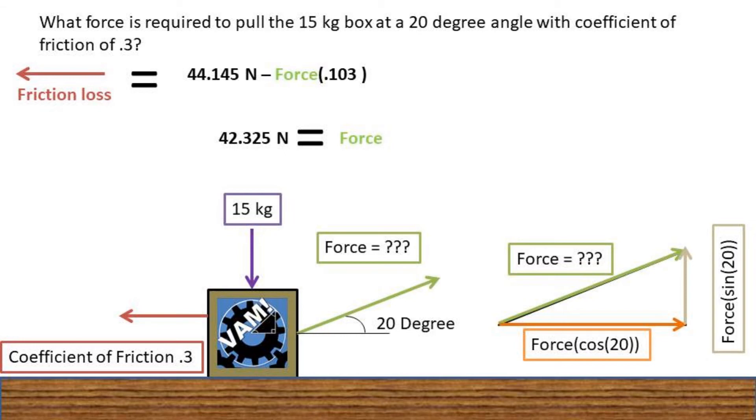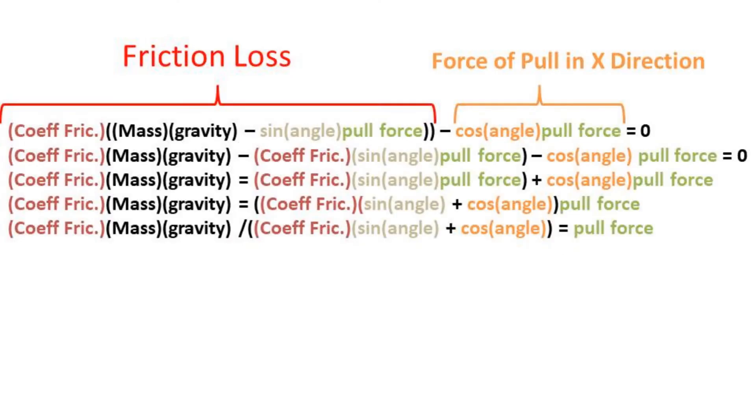They more than likely will not be exact due to rounding. Now another way to solve this problem is to keep everything as a variable, then rearrange the equation. So we take the friction loss minus the force of pull in the x direction and set it equal to zero. Rearranging the equation, we get the coefficient of friction times mass times gravity over the coefficient of friction times sine of the angle plus the cosine of the angle equals the pull force.